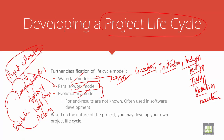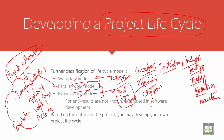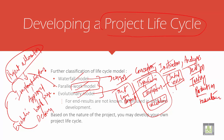The evolutionary model works hand in hand. It starts with an outline description, then specification, then development, then validation. This connects to an initial version, then an intermediate version, and finally the final version. This is how the evolutionary model is done in a systematic manner.